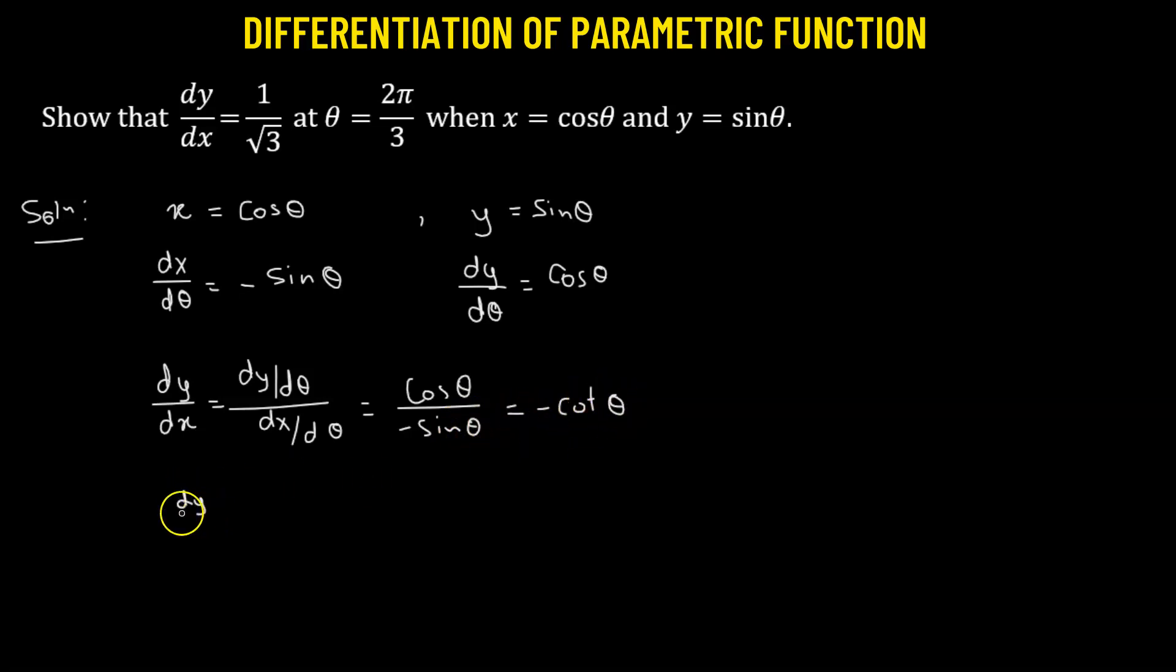Now to obtain the value of derivative of y with respect to x at theta equals to 2π over 3 radians, this will be negative cotangent of 2π over 3.